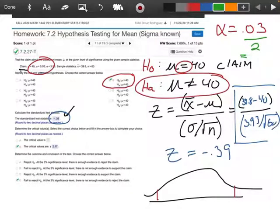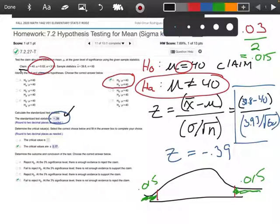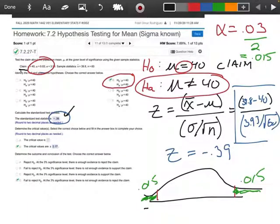And the way I find that tail is I'm going to take this number here and divide it by two, and that's going to give me 0.015. So all that's telling me is that the area underneath here is 0.015, and the area underneath this part is 0.015. So now what we need to do, we need to find those two critical values. Remember, one of them is going to be negative, and one of them is going to be positive.